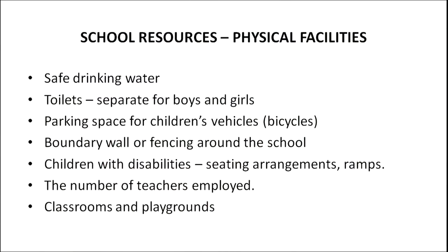Some of the school resources — called physical facilities — that need to be equipped are: safe drinking water; toilets, separate for boys and girls; parking space for children's vehicles; boundary wall or fencing around the school premises; proper seating arrangement and ramps for children with disabilities; an adequate number of teachers; and properly maintained classrooms and playgrounds.